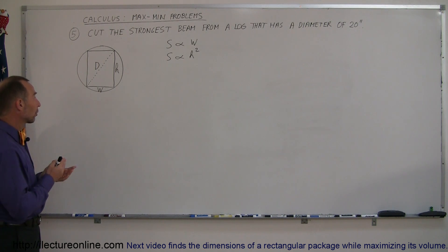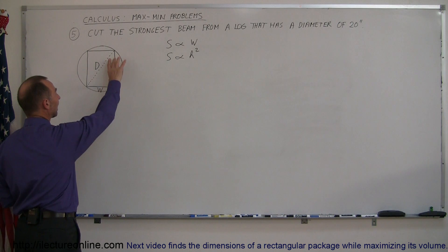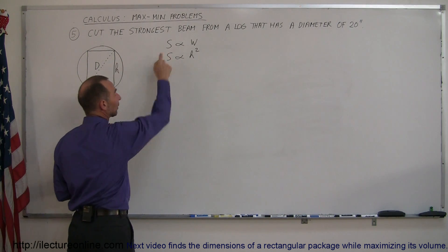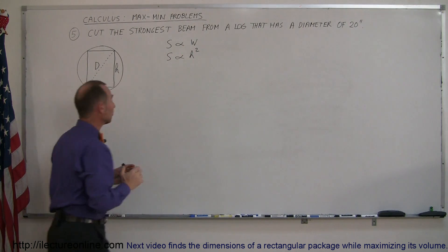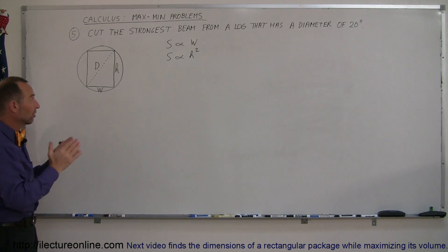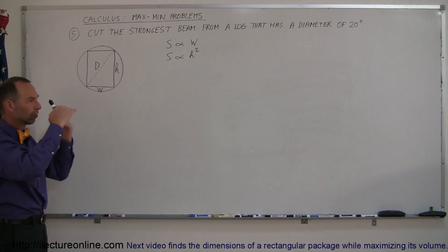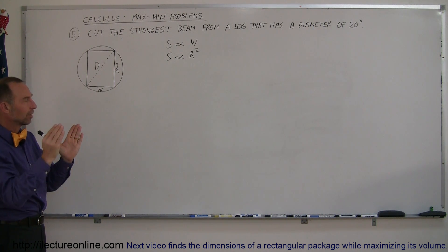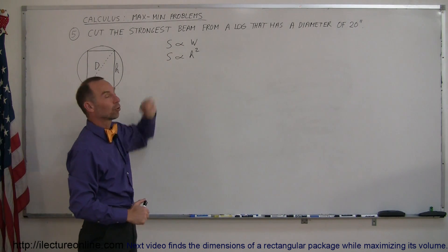Now, the way that works is that the beam strength depends upon the width and the height, and the strength, if we let S represent the strength of the beam, is proportional to the width, which means if you double the width of a beam you get twice the strength. So that's why when we put two-by-fours together and we use that as a support of something, the more side-by-side two-by-fours you put the stronger the beam gets, but it's only linearly proportional to the width.